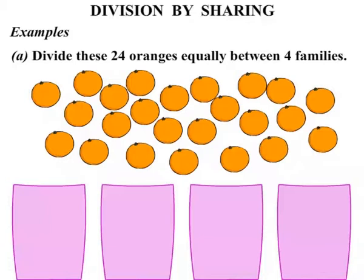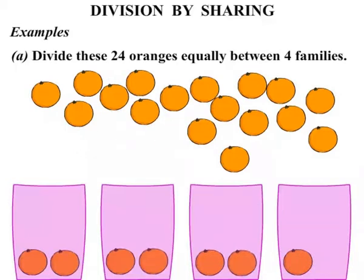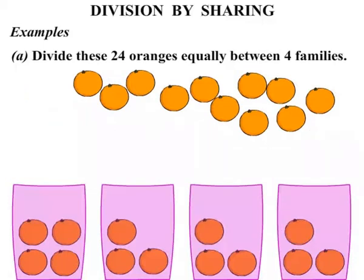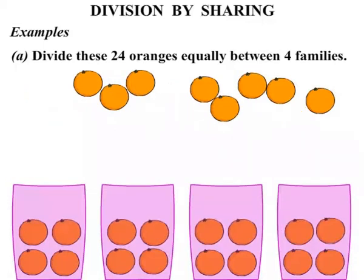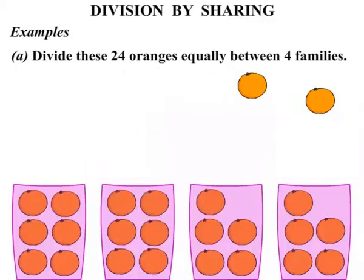Now we are going to move 1 orange at a time. 1, 2, 3, 4, 5, 6, 7, 8, 9, 10, 11, 12, 13, 14, 15, 16, 17, 18, 19, 20, 21, 22, 23, 24. So the 24 oranges have been split up.